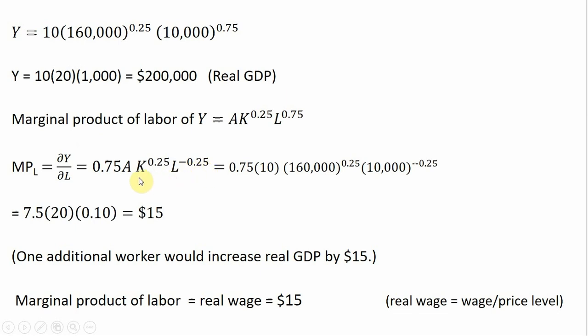We evaluate this marginal product of labor at A equals 10, K equals 160,000, and L equals 10,000. Simplifying, we get the marginal product of labor equal to $15. The interpretation: one additional worker would increase real GDP by $15. In equilibrium, the real wage equals the marginal product of labor, so the real wage is $15 — that is, the nominal wage divided by the price level.